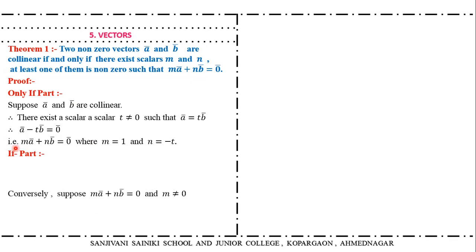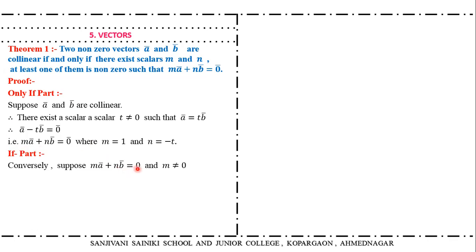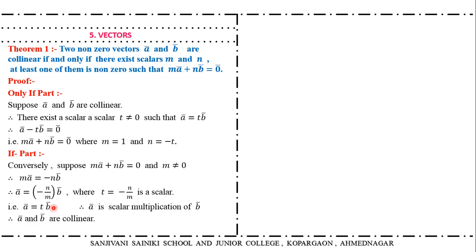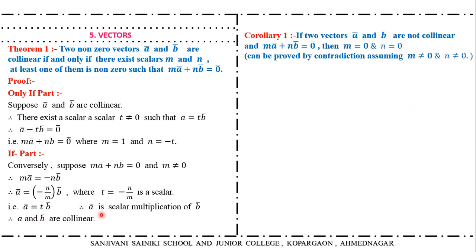Now the if part. Suppose M·A bar plus N·B bar equals zero and M is not equal to zero; we have to prove the vectors are collinear. Since M is nonzero we can divide the equation by M, giving A bar equals minus N over M times B bar. Let T equal minus N over M, so A bar equals T times B bar where T is a scalar. Thus A bar is a scalar multiple of B bar and hence A bar and B bar are collinear.